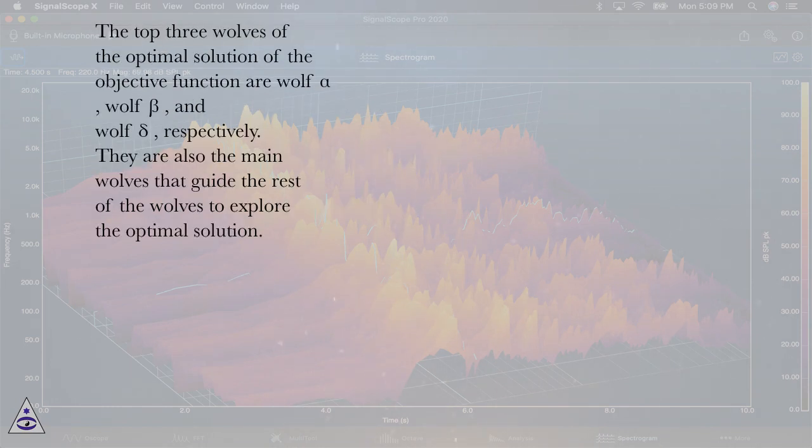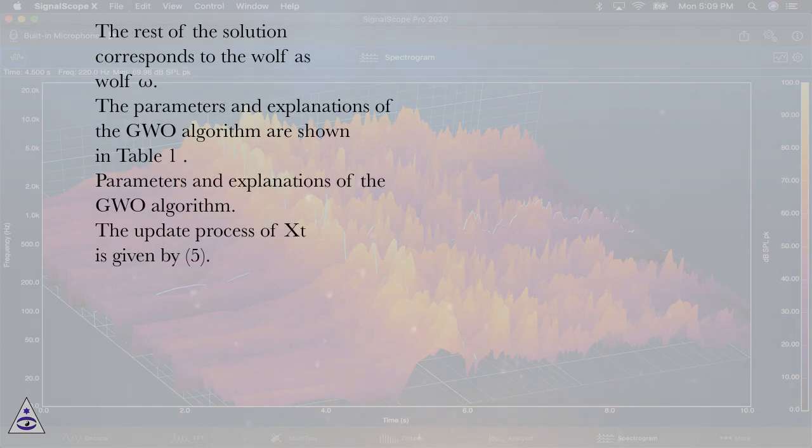The top three wolves of the optimal solution of the objective function are wolf alpha, wolf beta, and wolf delta, respectively. They are also the main wolves that guide the rest of the wolves to explore the optimal solution. The rest of the solution corresponds to the wolf as wolf omega.